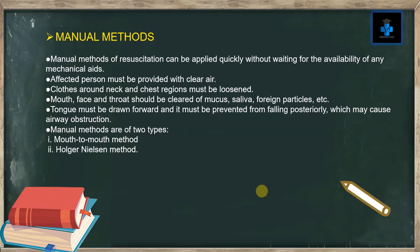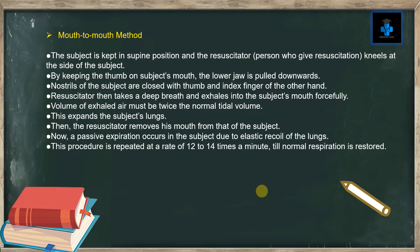Manual methods are also of two types: number one, the mouth-to-mouth method, and number two, the Holger Nelson method. For the mouth-to-mouth method, the subject is kept in the supine position and the resuscitator kneels at the side of the subject. By keeping the thumb on the subject's mouth, the lower jaw is pulled downwards. The nostrils of the subject are closed with the thumb and index finger of the other hand. The resuscitator then takes a deep breath and exhales into the subject's mouth forcefully.